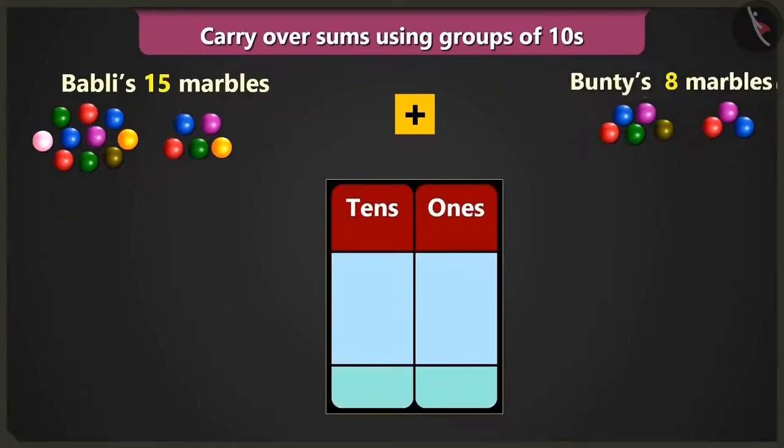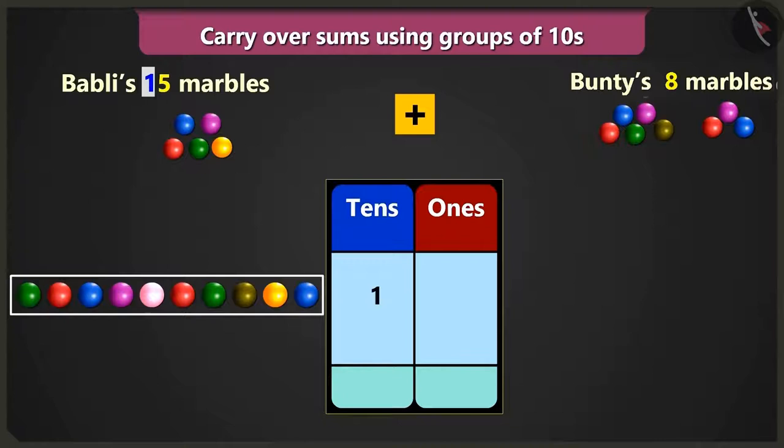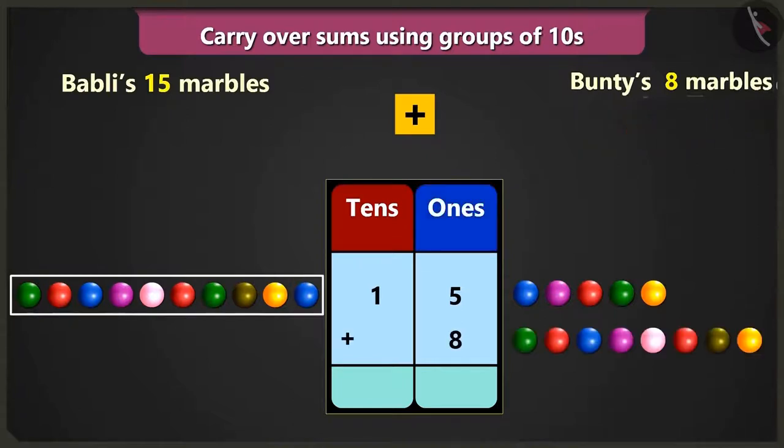I have 1 tens and 5 ones. You have 15 marbles. So, we will write 1 in the box of tens and 5 in the box of ones. Yes, and you had 8 marbles. So, we will write 8 in the box of ones.